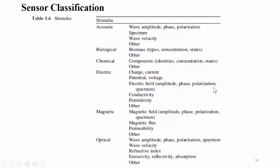Sensors are classified according to electric detection parameters including current variation, potential and voltage variation, electric field amplitude, phase, and polarization, spectrum-based sensors, and conductivity-based sensors. For magnetic field detection, sensors measure amplitude, phase, polarization, and magnetic flux detection, with permeability also being an important parameter.